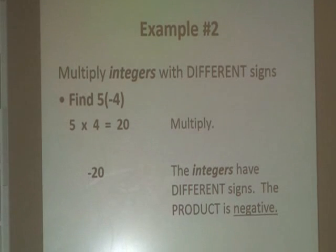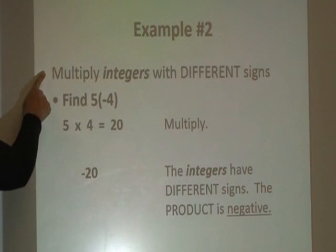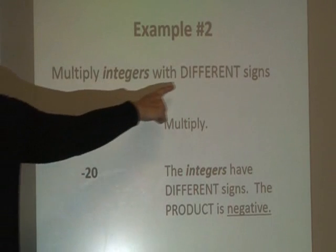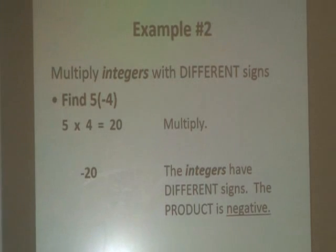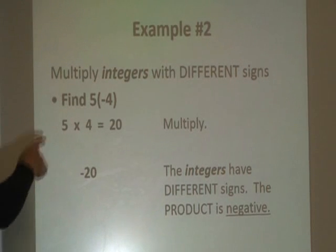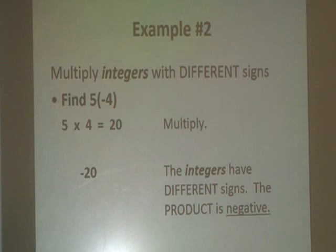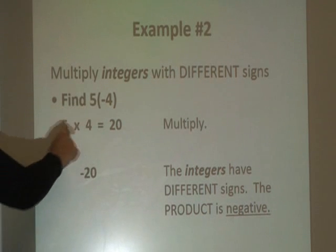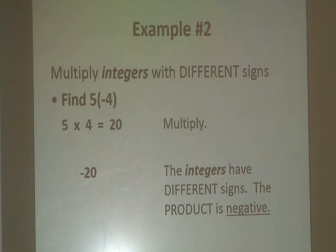Let's look at a second example. Please make note that this is for multiplying integers with different signs. So when we're presented with the problem 5 times negative 4, simply multiply 5 times 4. Simple math facts, and we know that's 20.